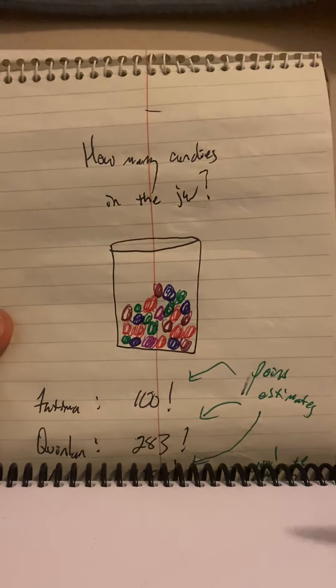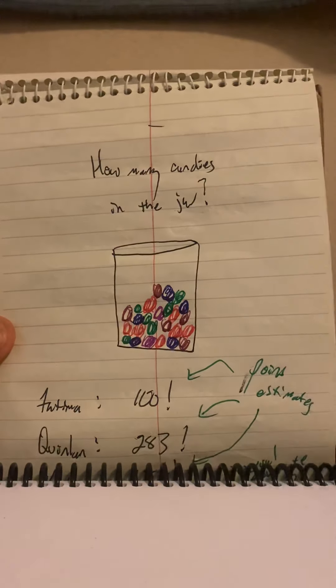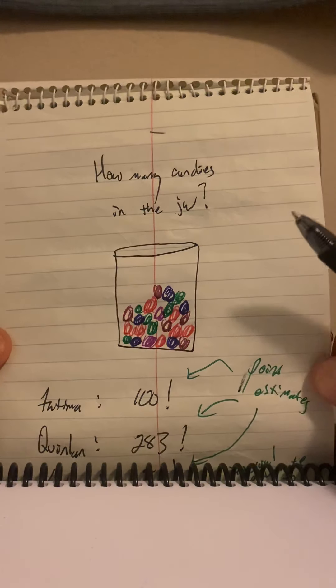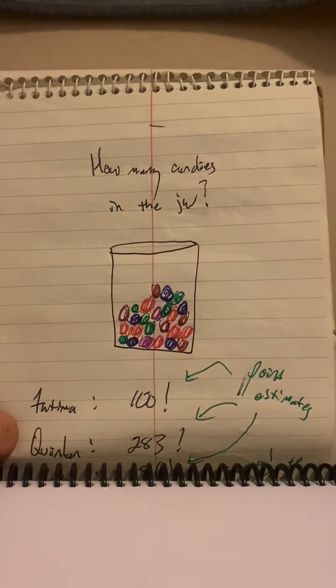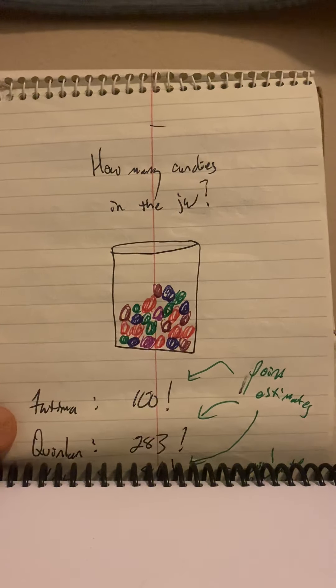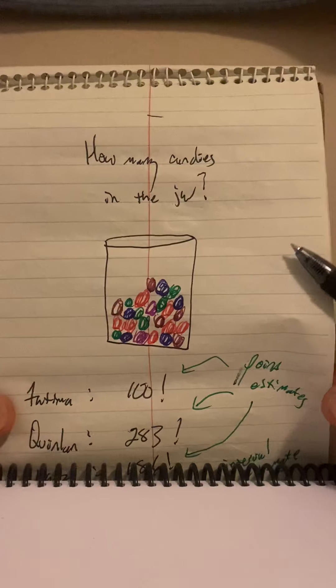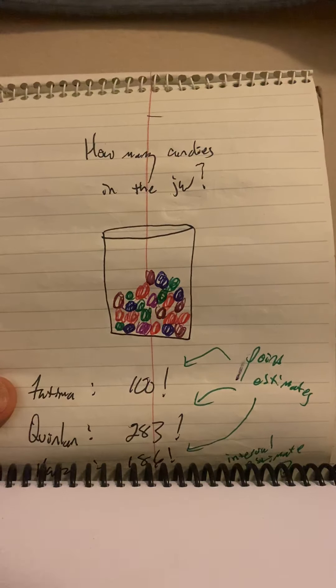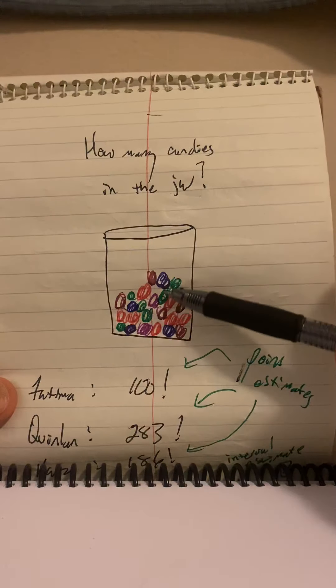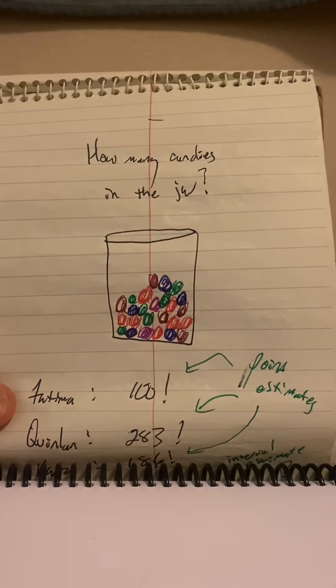Fatima wants those candies. She looks at it and says there's 100 candies in there. Quinlan says I'll share with Fatima. There's way more than 100. I could give her 100 and still have plenty for myself. So Quinlan slowly calculates the volume of the whole thing, the volume of the candy and divides. And he says there's 283.